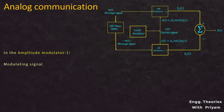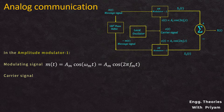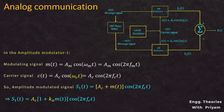For Modulator 1, the message signal m(t) = Am·cos(2π·fm·t) and the carrier signal c(t) = Ac·cos(2π·fc·t). So the amplitude modulated signal s1(t) is equal to [Ac + m(t)]·cos(2π·fc·t), which can be written as s1(t) = Ac·[1 + k·m(t)]·cos(2π·fc·t). This is identified as Equation 1, where k is the amplitude sensitivity.